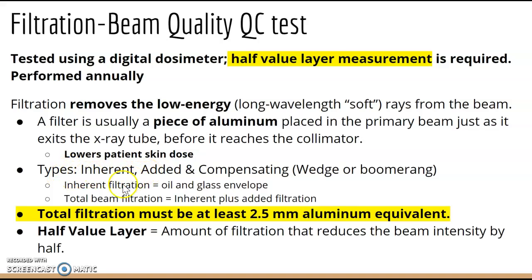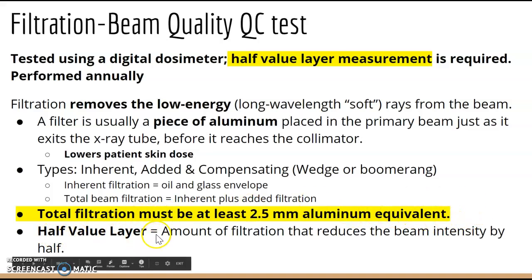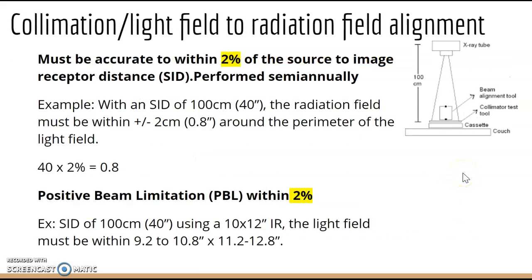Types of filtration include inherent and added. Inherent filtration is inherent to the tube — the oil and glass envelope. Added is anything added on. Total beam filtration equals inherent plus added. There are also compensating filters such as wedge or boomerang types. Total filtration must be at least 2.5 millimeters aluminum equivalent. The half value layer is the amount of filtration that reduces beam intensity by half.